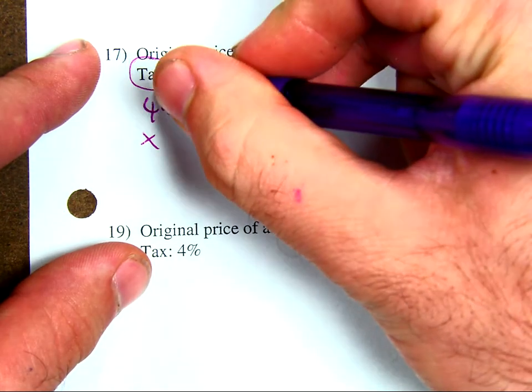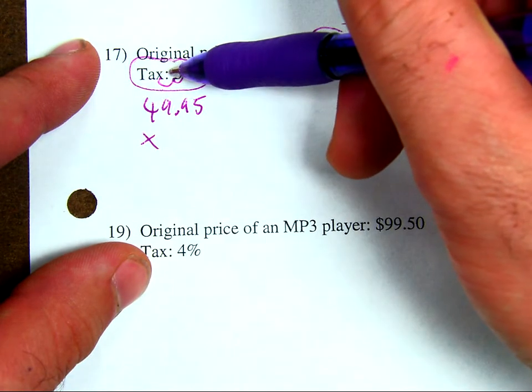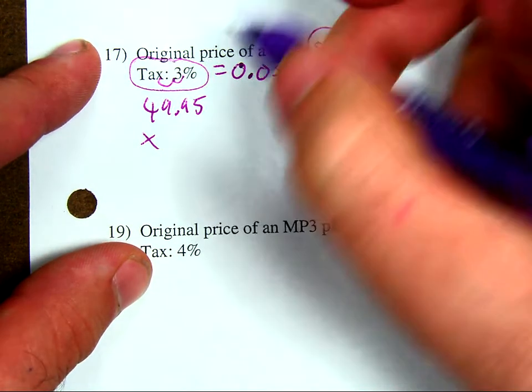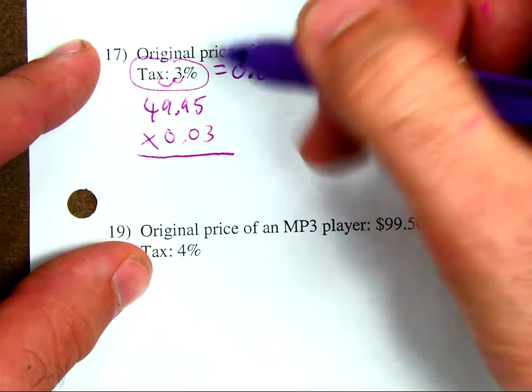I don't have anything here, so I need to add a 0 as a placeholder. Here, 0.03, multiply it times 0.03. This is an easy one. I can do this one by hand. 3 times 5 is 15. 9 times 5 is 27, plus 1 is 28.